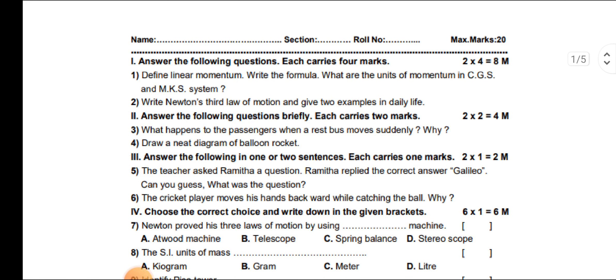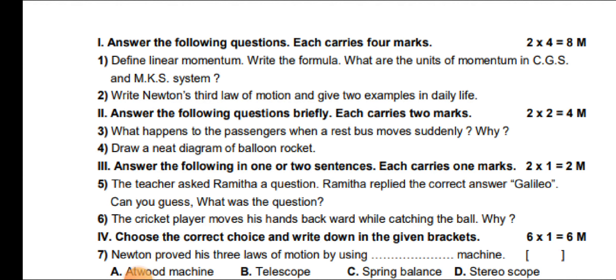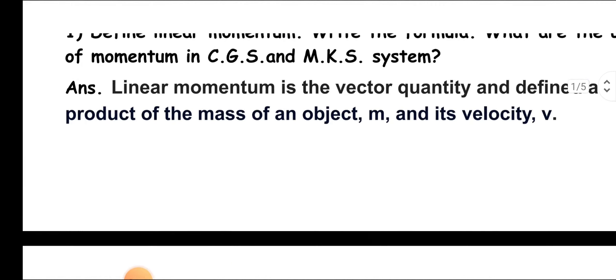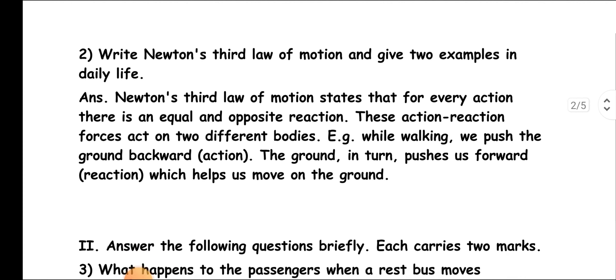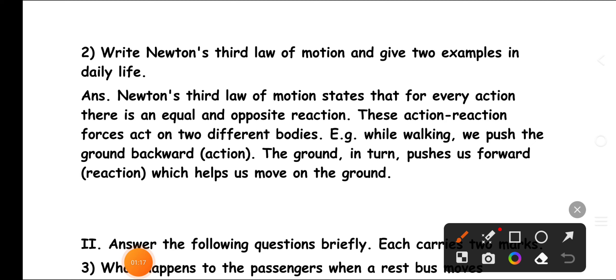Question number 2: Write Newton's third law of motion and give two examples in daily life. Answer: Newton's third law of motion states that for every action there is an equal and opposite reaction. These action-reaction forces act on two different bodies. Example: While walking we push the ground backward (action). The ground in turn pushes us forward (reaction), which helps us move.